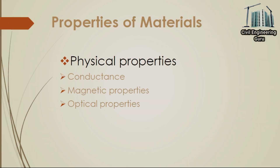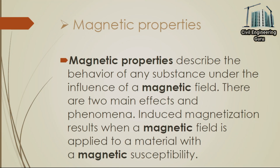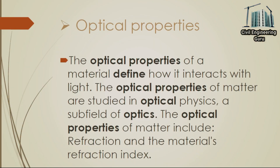Now moving toward physical properties. Conductance is the degree to which an object conducts electricity, calculated as the ratio of the current which flows to the potential difference present. This is the reciprocal of the resistance and is measured in Siemens or Mhos. Magnetic properties describe the behavior of any substance under the influence of a magnetic field. Induced magnetization results when a magnetic field is applied to a material with a magnetic susceptibility. Optical properties of a material define how it interacts with light, including refraction and the material's refractive index.